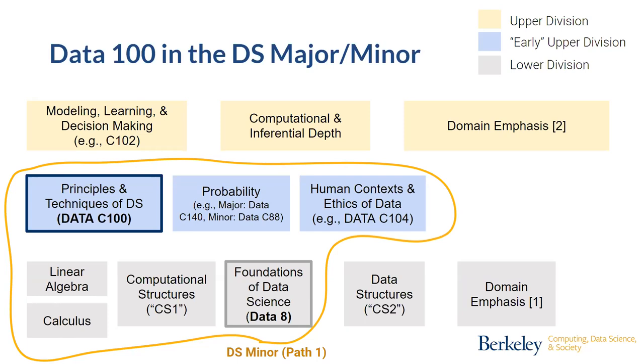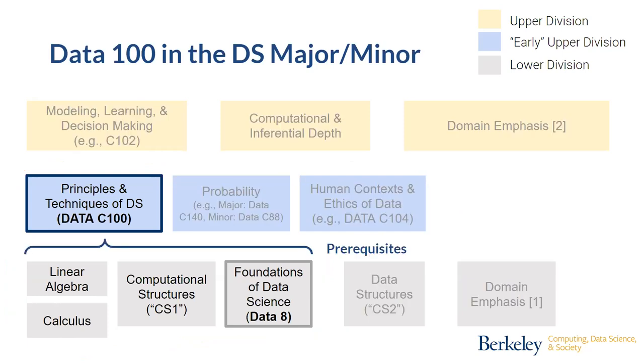There's a question in the audience. Yeah, fantastic question. So the question was, what are the prerequisites of Data 100? It's Data 8, it's also a CS1 type of introductory computational structures, this is usually in the CS department, but it's also in data. And then calculus and linear algebra. As John mentioned this morning, at UC Berkeley, the current linear algebra course has a prerequisite of calculus. So students are coming in with this mathematical and computational and data science background before they come into Data 100.